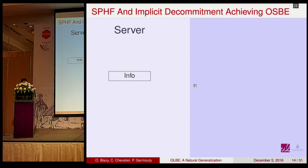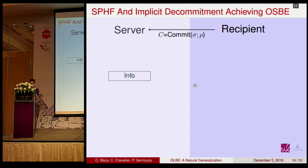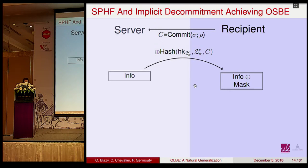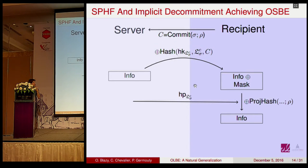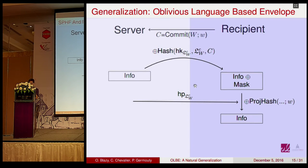We now use SPHF to create our OSBE. The recipient commits using the commitment scheme, and the server masks with the hash value H. The language L_{c,sigma} is the set of all commitments of the signature sigma. If c belongs to this language, the user can project c using the projection key and the witness — the randomness used to commit.